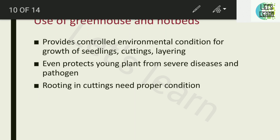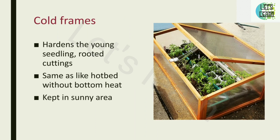The main uses of the greenhouse and hot bed are: they provide controlled environment conditions for the growth of seedlings, cuttings, and layerings — which we will learn about in upcoming classes. They also protect plants from severe diseases and pathogens. Rooting and cuttings need proper conditions, which can be given by greenhouses, hot beds, and other protected structures.